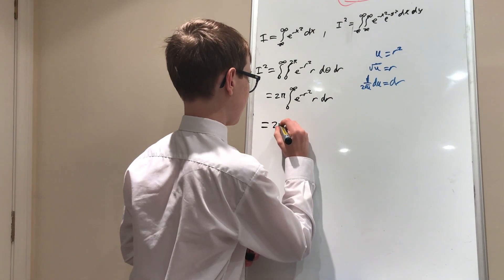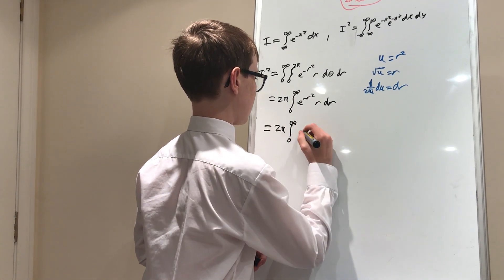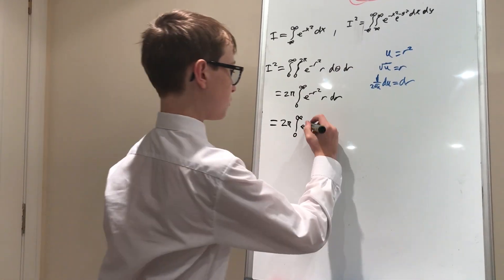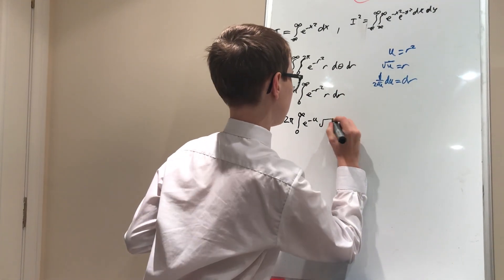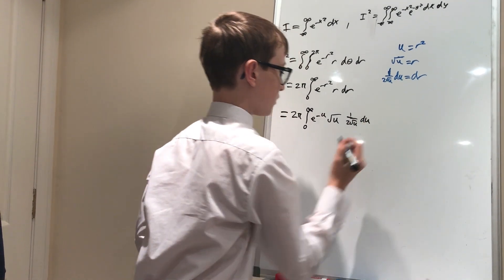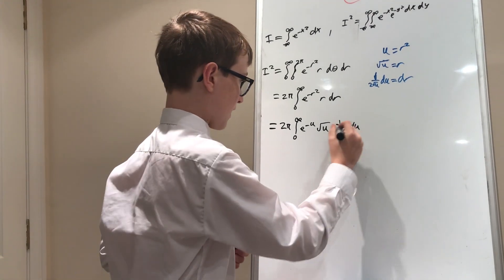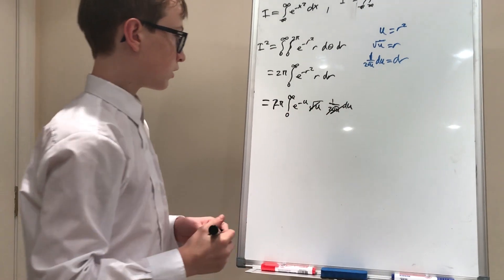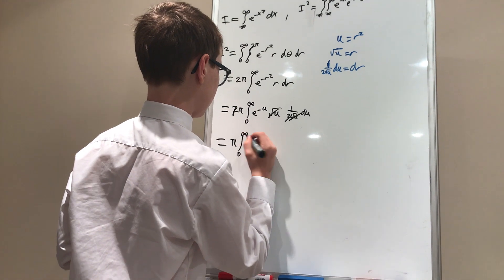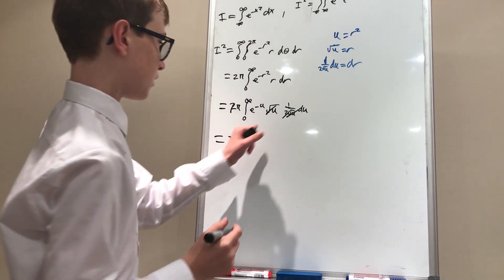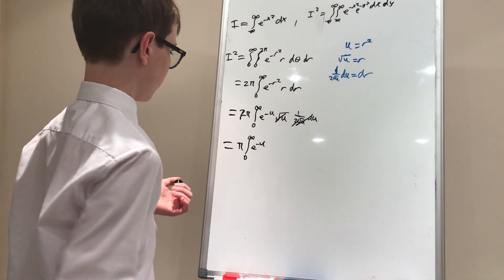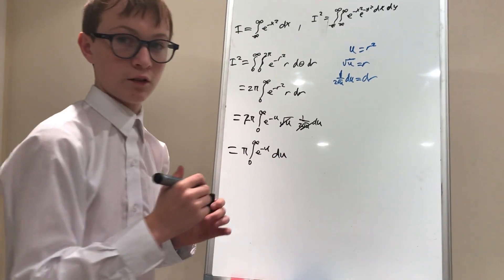So now this equals two pi times the integral between zero and infinity of e to the negative, what's r squared? Just u. Times r is just the square root of u, times one over two square root of u du. But this is a lot easier than it looks because that and that will cancel. That and that will cancel. Overall, leaving us with pi times the integral between zero and infinity of e to the negative u. That square root and that square root canceled, and then that two and that two canceled. So actually, everything canceled out really nicely.